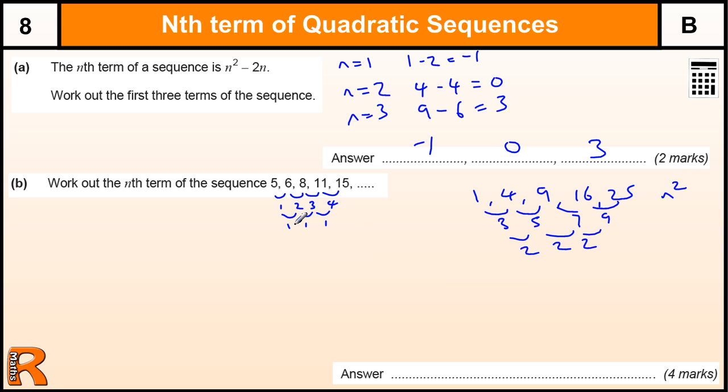So what we should know from this is that this sequence that goes up by 1 is based on a half of this. So it's a half n squared.